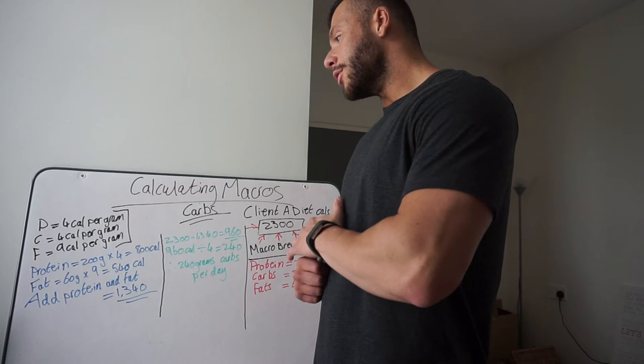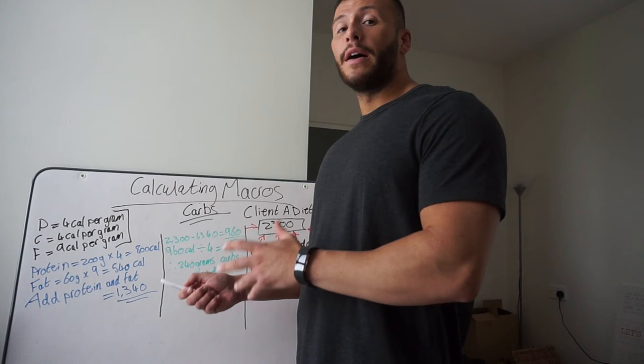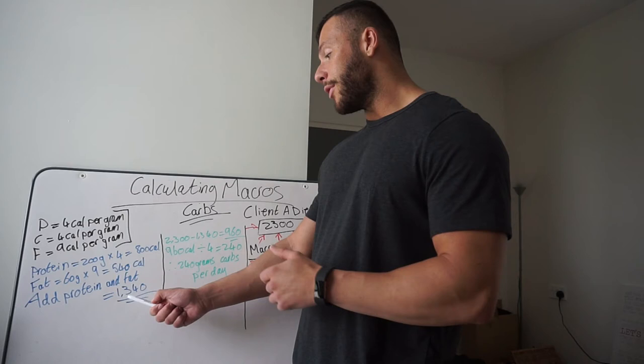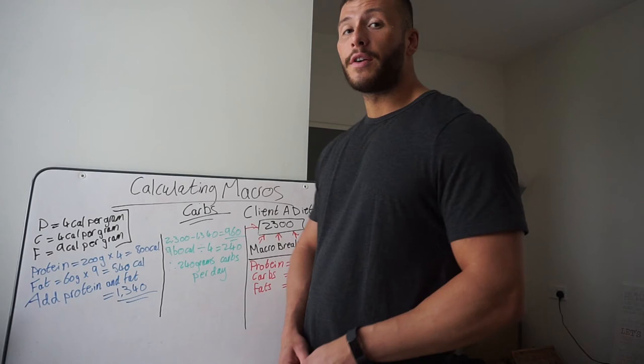So what we're going to do is take our 200 grams of protein, multiply it by four. That's going to give us 800 calories of protein. We're going to take our 60 grams of fat, multiply it by nine. That's going to give us 540 calories of fat. Then what we're going to do is add these numbers together. That's going to give us 1340 calories.